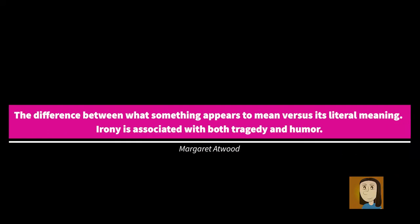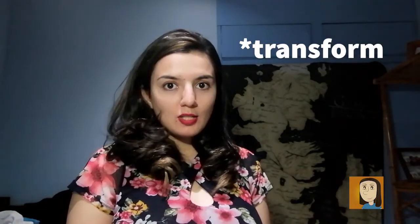What exactly is the definition of irony? Margaret Atwood, in an article for MasterClass, basically describes irony as the difference between what something appears to mean versus its literal meaning. Irony is often associated with both tragedy and humor. What we can basically learn from this is that irony is a contrast between what is expected and what the reality ends up to be. So if you find yourself in a situation where you are expecting to get a result but then you get something completely different, that could become an ironic situation.